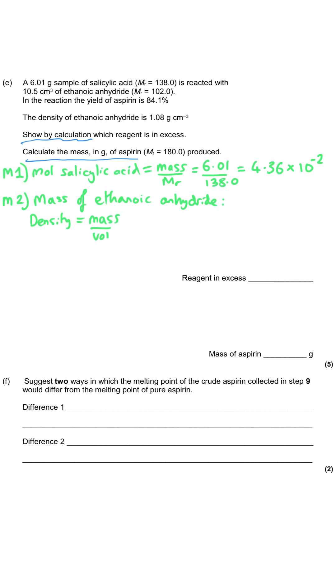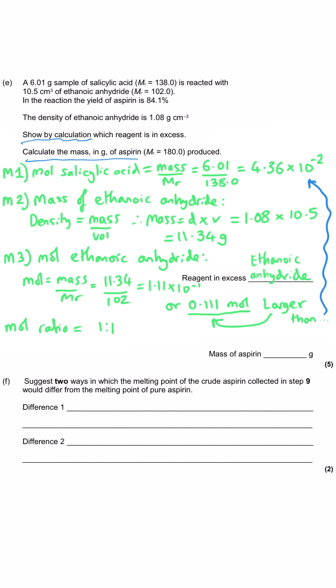Since density is mass over volume, mass will be density times by volume. So when we do 10.5 times by 1.08, we get 11.34 grams. And now, since we've got the MR of 102, we can work out what the moles of ethanoic anhydride is by dividing that new mass that we've calculated by the MR of 102. And in that situation, we get 1.11 times 10 to the minus 1, or 0.111. Since in the previous part of the question we saw that the mole ratio was 1 to 1, so 1 salicylic acid to 1 ethanoic anhydride, it's just a case of looking at which of these two numbers is the larger. And it's, of course, the ethanoic anhydride that is present in excess because 0.111 is larger than 4.36 times 10 to the minus 2.